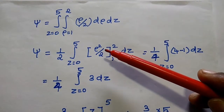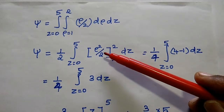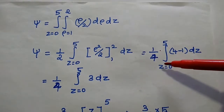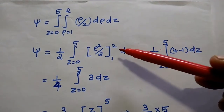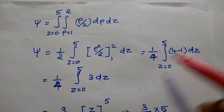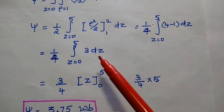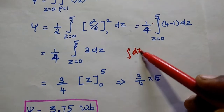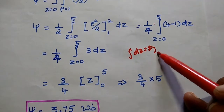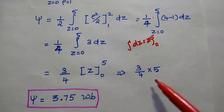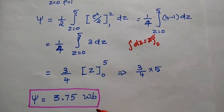The constant 1/2 is taken outside. Integrating with respect to ρ gives ρ²/2, and taking 1/2 outside and substituting limits 1 to 2 gives 1/4 times the integral from z = 0 to 5 of (2² minus 1²) dz, which is 4 minus 1 = 3. Taking 3 outside as a constant and integrating with respect to z gives z from 0 to 5, so 5 minus 0 = 5. Therefore 3/4 times 5 gives the answer 3.75 Weber. This is the final answer.